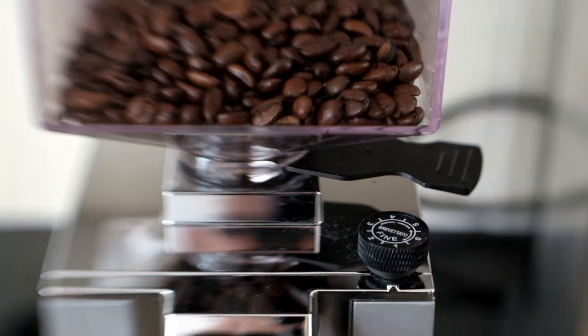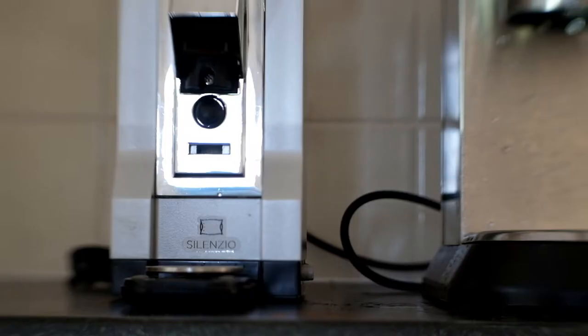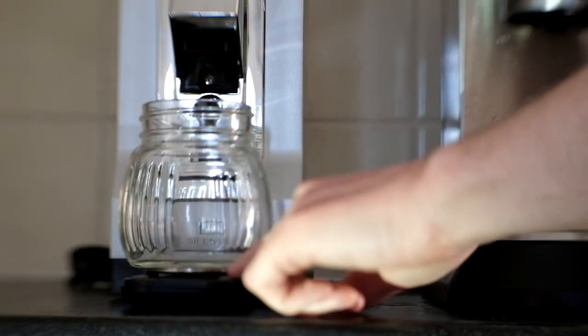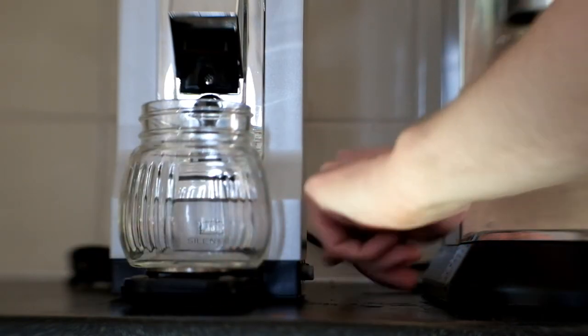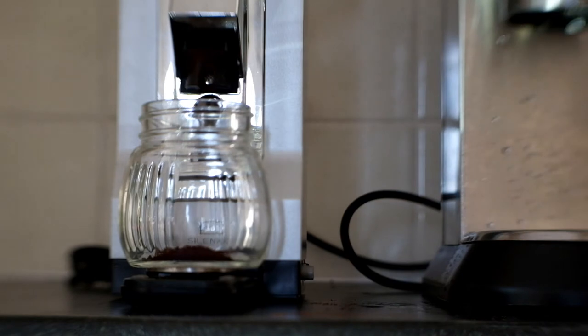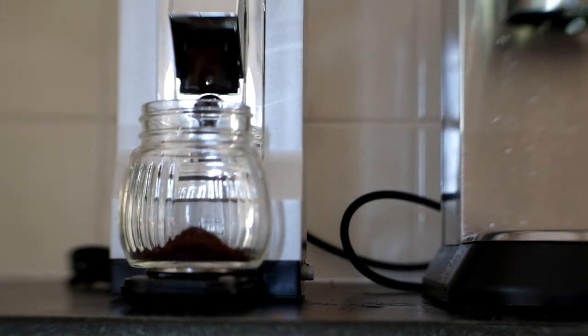I tend to find that most of my shots come out within the range on the grinder between 0.5 and 1.5, depending on the beans and the age of the beans. I tend to find darker roasts work better. The lighter the roasts, the more chance there is that things are going to go a bit wrong.